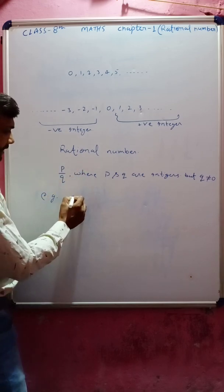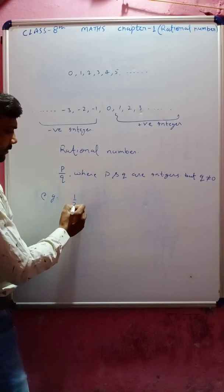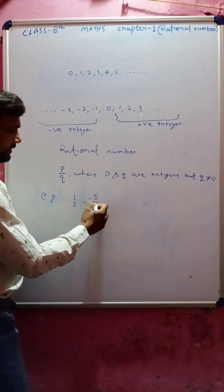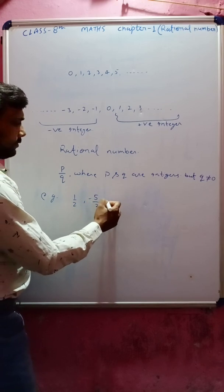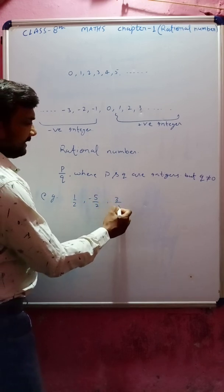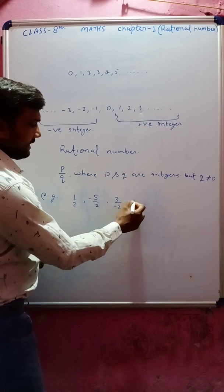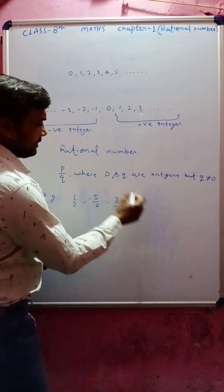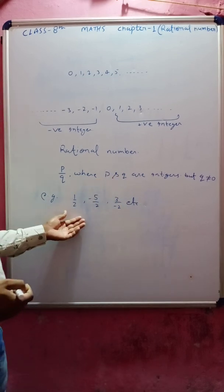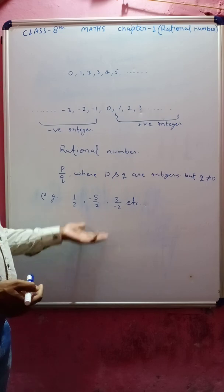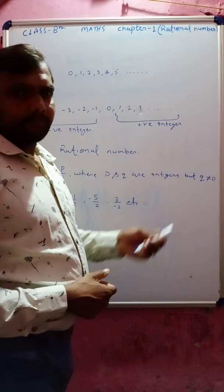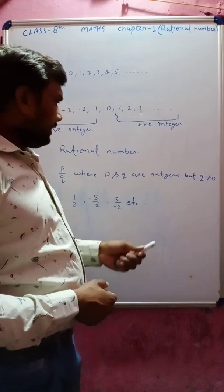Any number written in the form p upon q is called a rational number. For example: 1 by 2, minus 5 by 2, 3 by minus 2, etc. Numbers written in this form are called rational numbers.